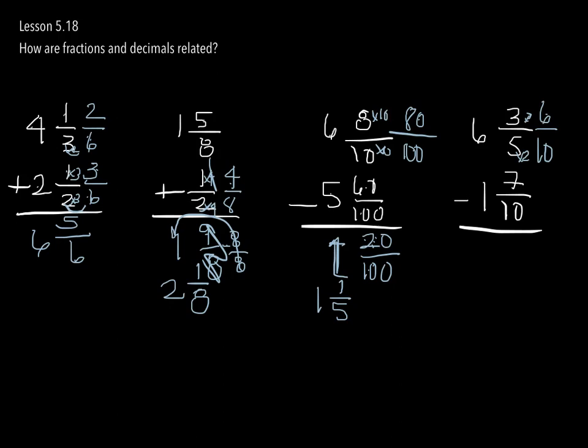Now 6 tenths less 7 tenths, I cannot do it. So I have to go to my neighbor, borrow some sugar. So 6 becomes 5. And I'm going to add 10 tenths to here. And I'm going to slide that up here just because I didn't give myself enough room. 10 tenths plus 6 equals 16 tenths. 16 tenths less 7 tenths, I can do. My language is 10. 16 less 7 is going to give me 9. And then 5 less 1 is going to give me 4.